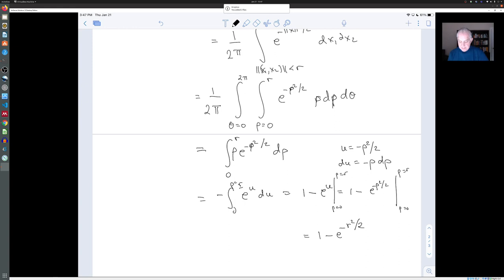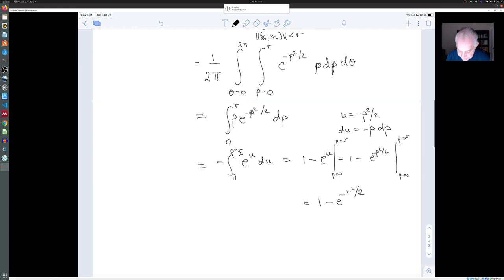And that's just 1 minus e to the minus R² over 2. So we actually have a nice formula for the probability that our error lands in that particular region.